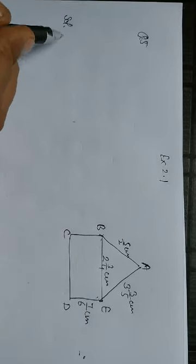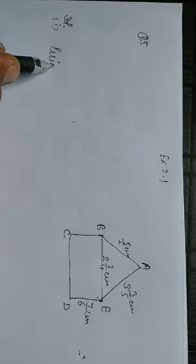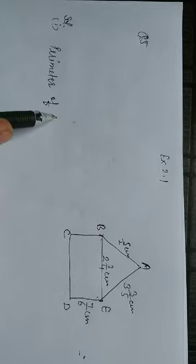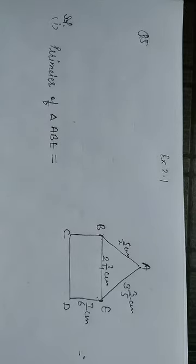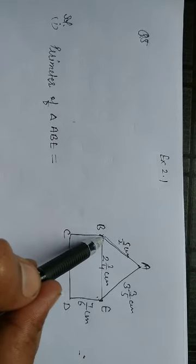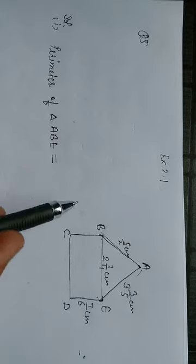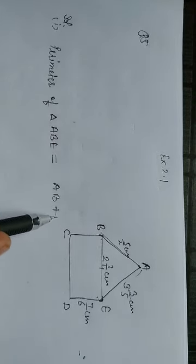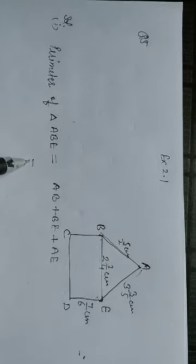Solution. First part is perimeter of triangle ABE. The triangle's perimeter will be the sum of all three sides: AB plus BE plus AE, which is the sum of all sides.